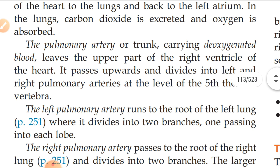The left pulmonary artery runs to the root of the left lung, where it divides into two branches, one passing into each lobe. The left side of the lung is divided into two lobes, and each branch enters one lobe of the lung.